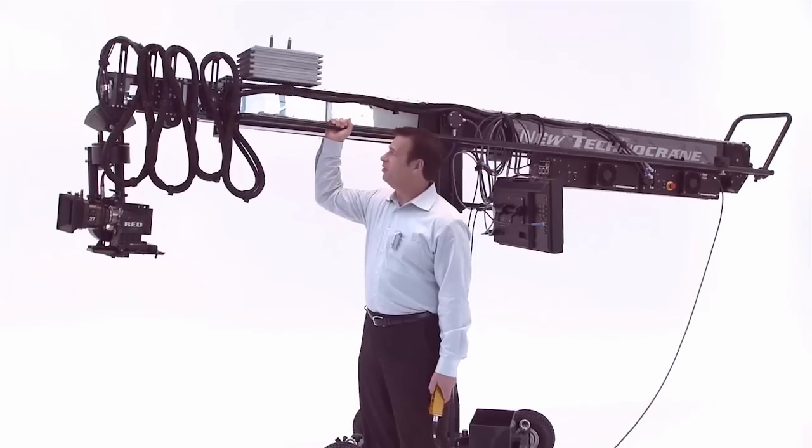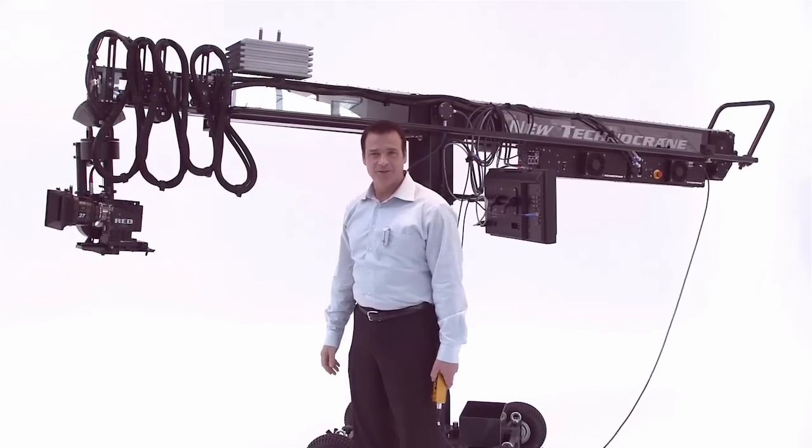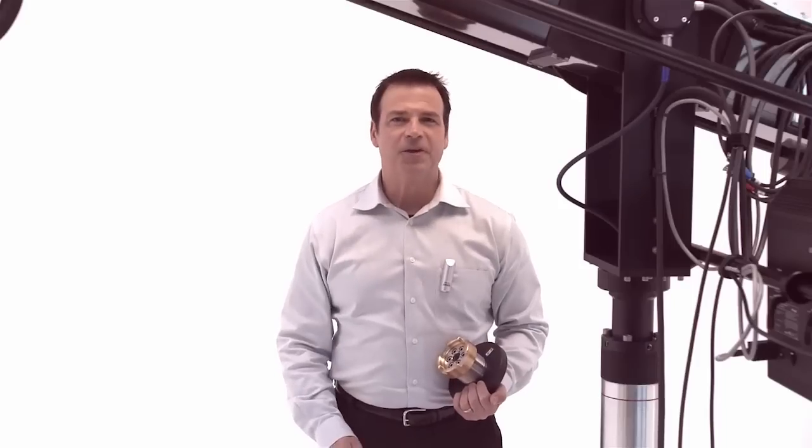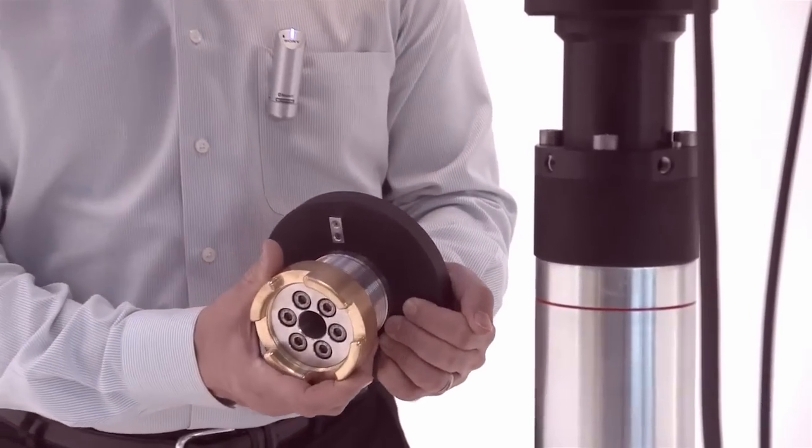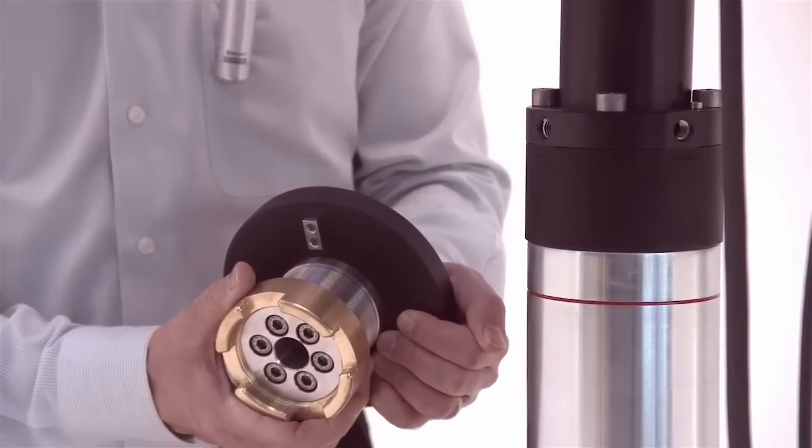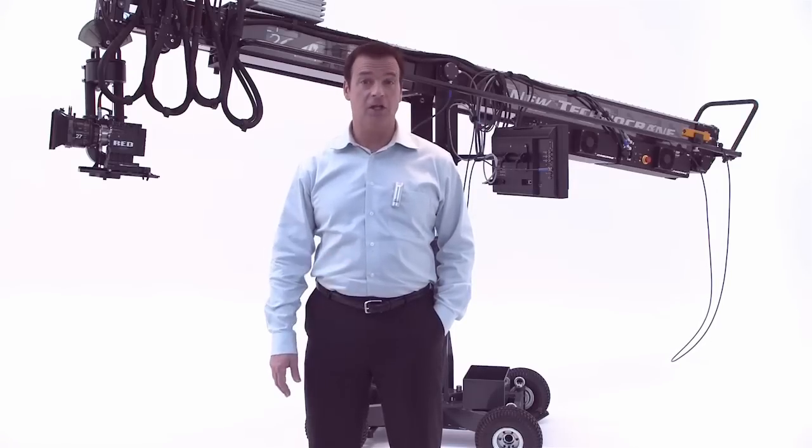Which means the new Technocrane can fit into the smallest of studios. The new Technocrane's telescopic arm is a fully functional jib when away from its base and can be fixed to any other dolly using this Mitchell adapter. The telescopic arm weighs 195 pounds or 88 kilos.